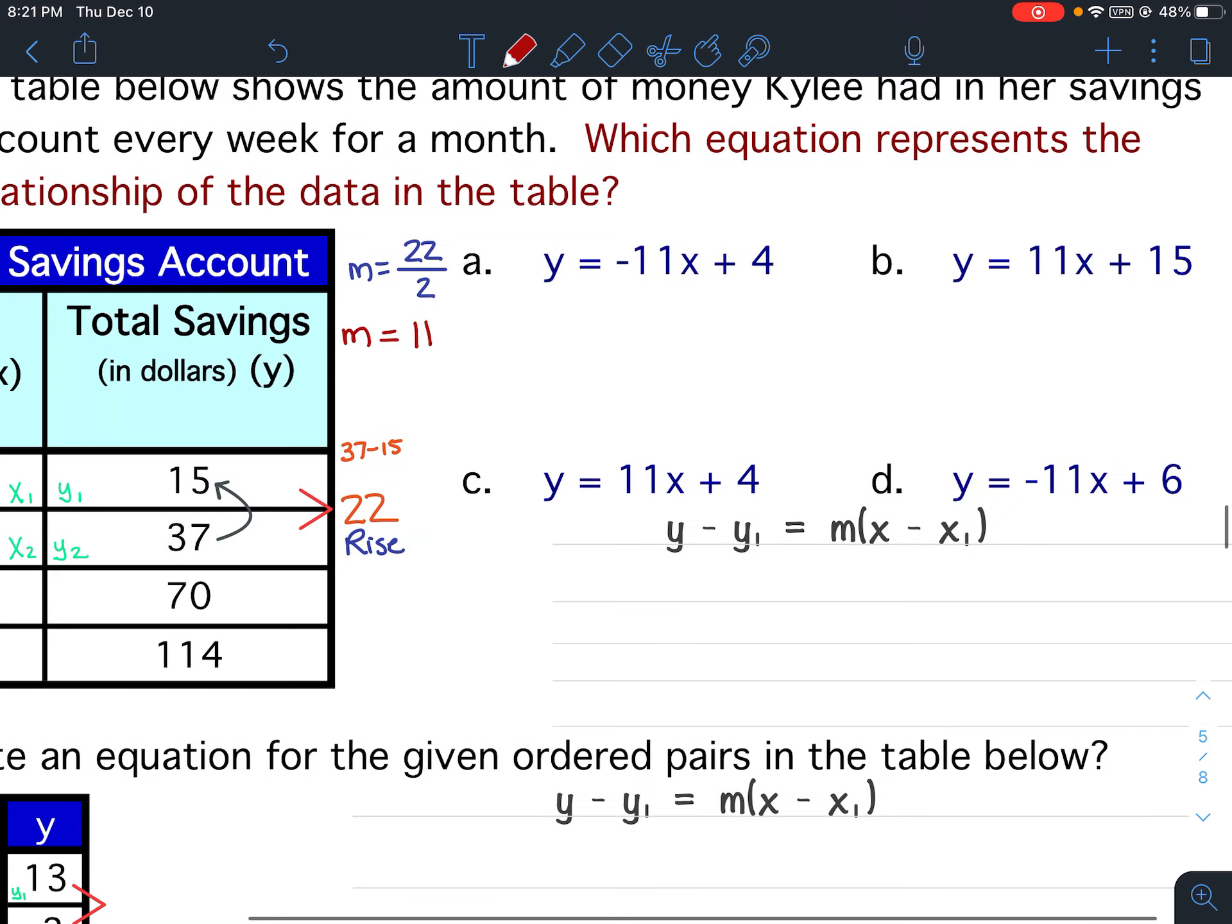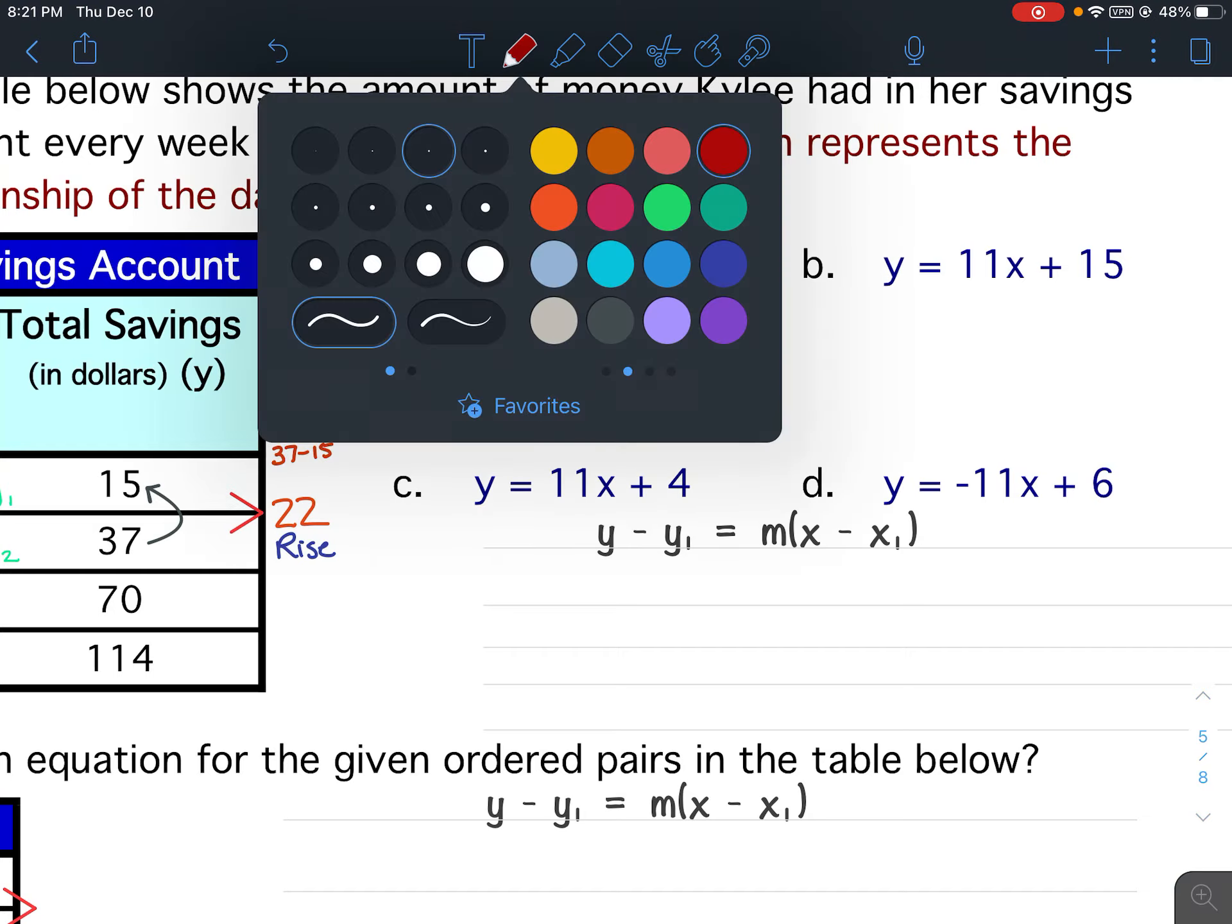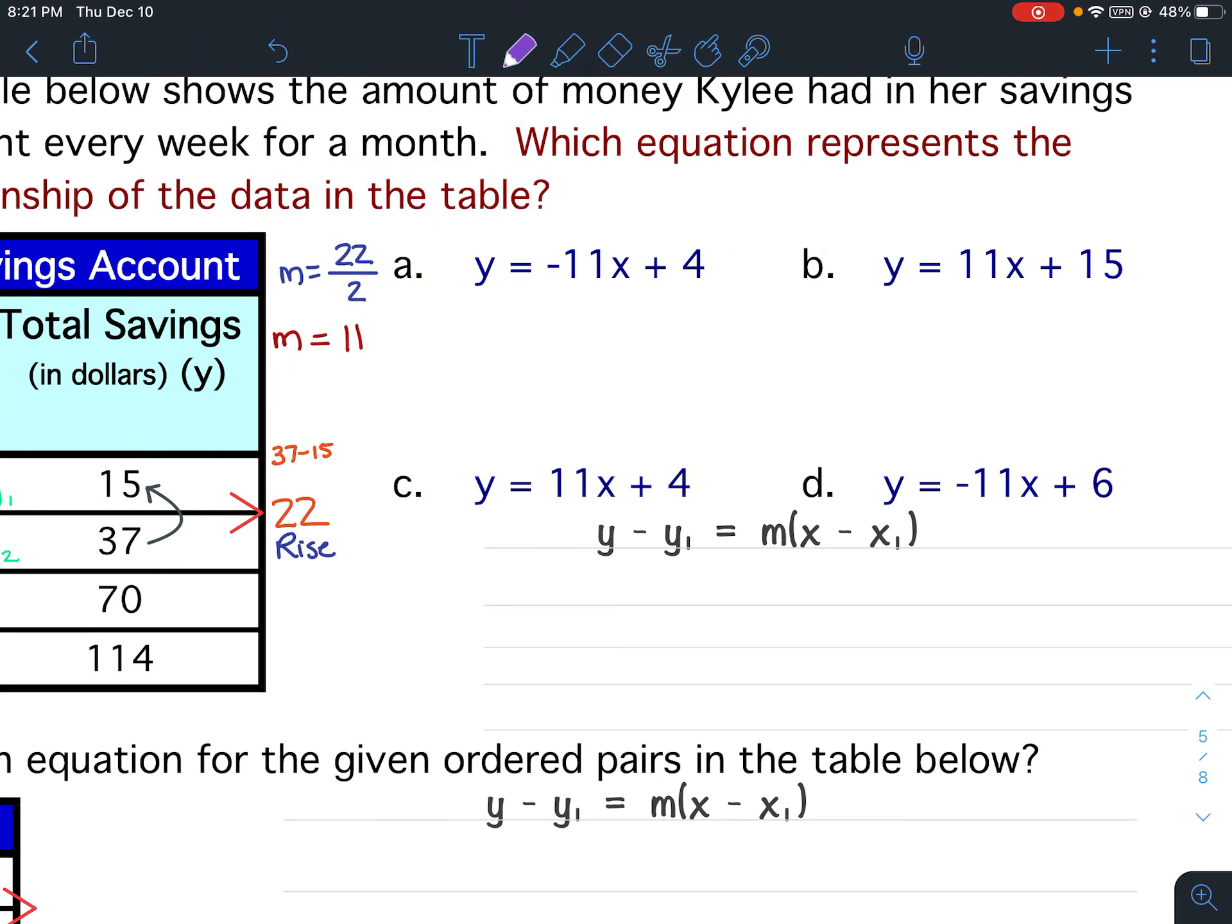All right, so let's go over here a second. Which ones can we eliminate knowing my slope is positive 11? Well, we can eliminate A because this says negative 11. So A can be eliminated. And we can eliminate D because that says negative 11. So now I know my choices are either B or C.